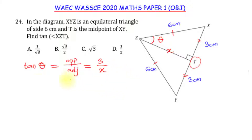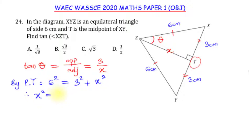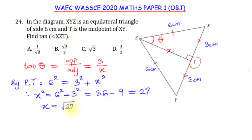To find X, we use the Pythagorean theorem. The square of the hypotenuse equals the sum of the squares of the other two sides: 6² = 3² + X². So X² = 6² − 3² = 36 − 9 = 27. Therefore X = √27 = √(9 × 3) = 3√3.